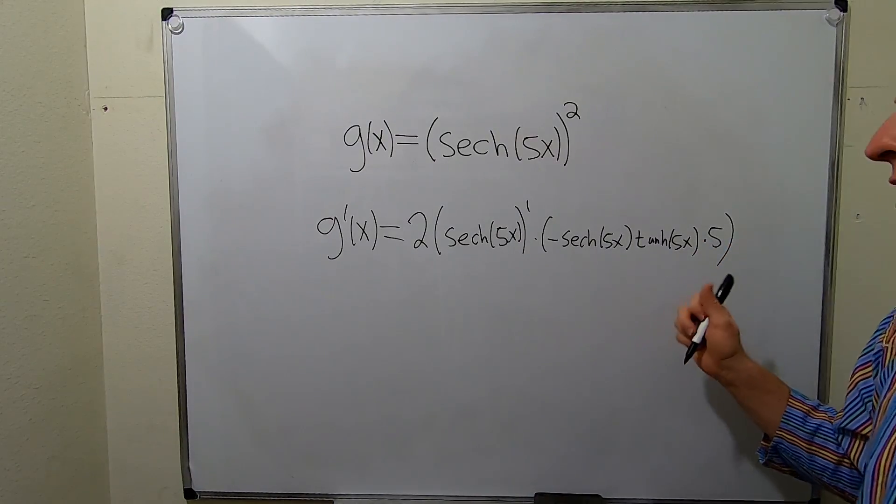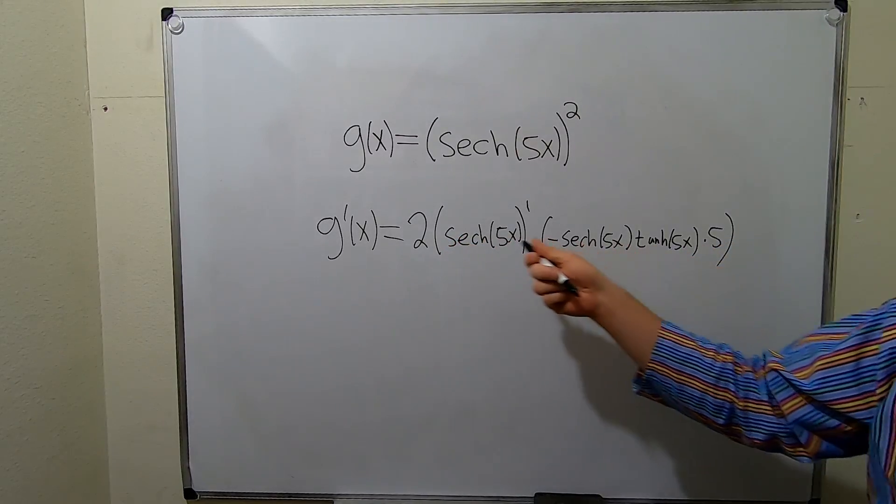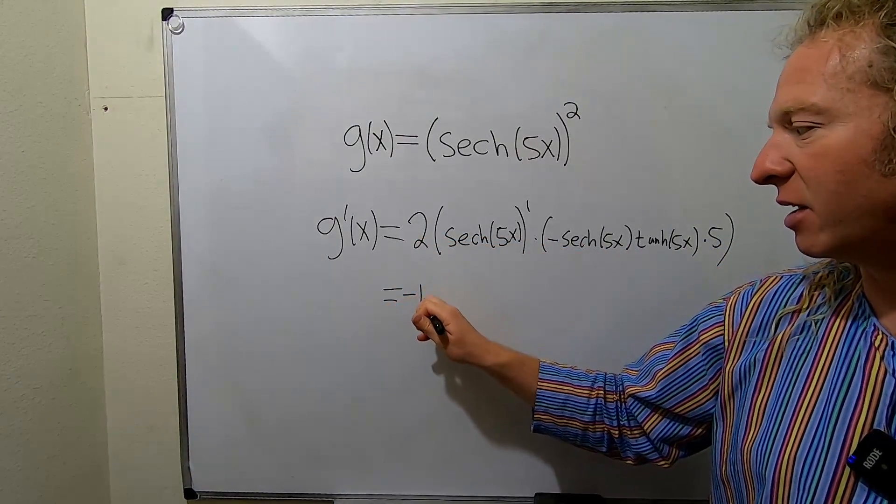The very last thing we can do is maybe multiply everything together. This is all being multiplied. So 5 times 2 is 10. So this is going to be negative 10.